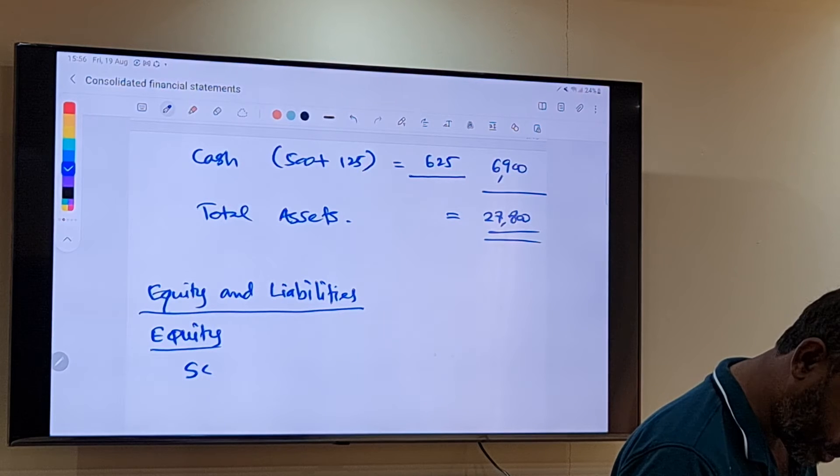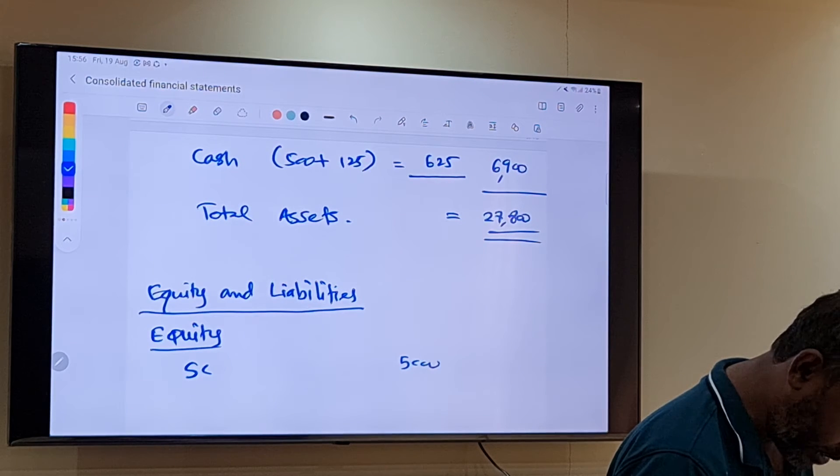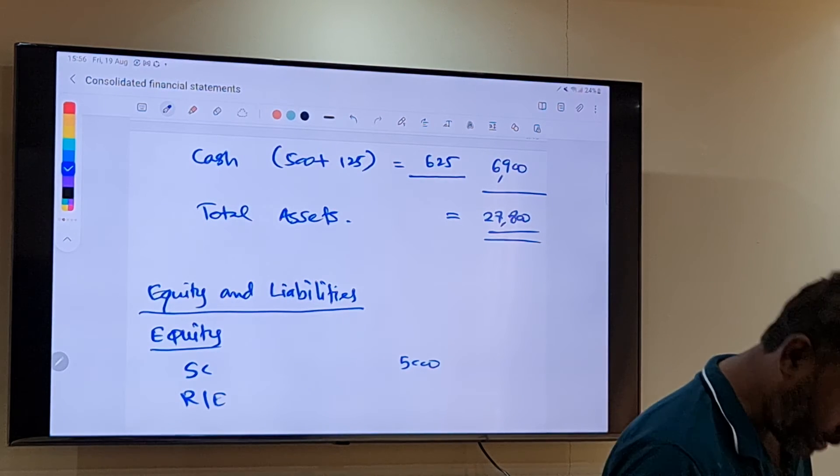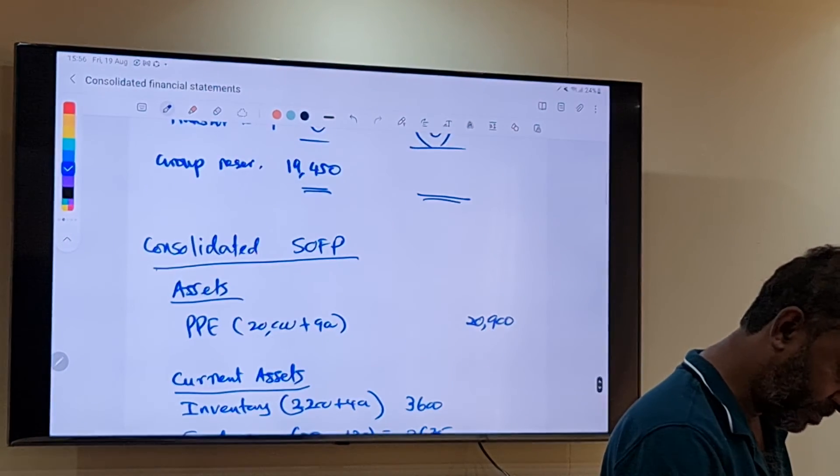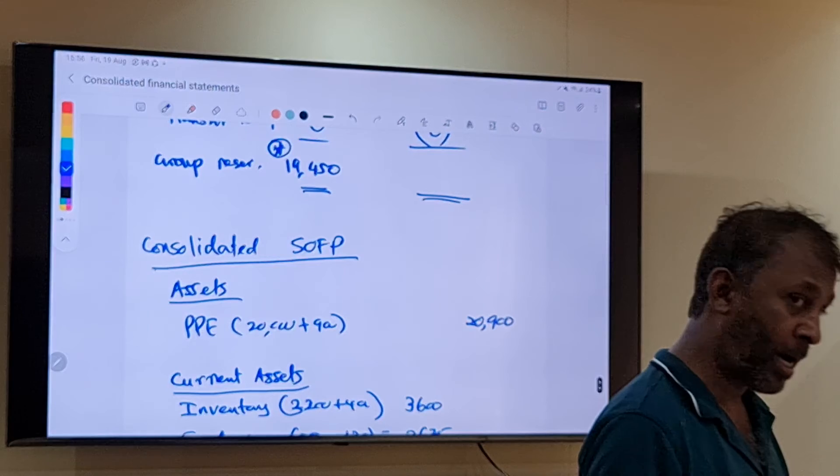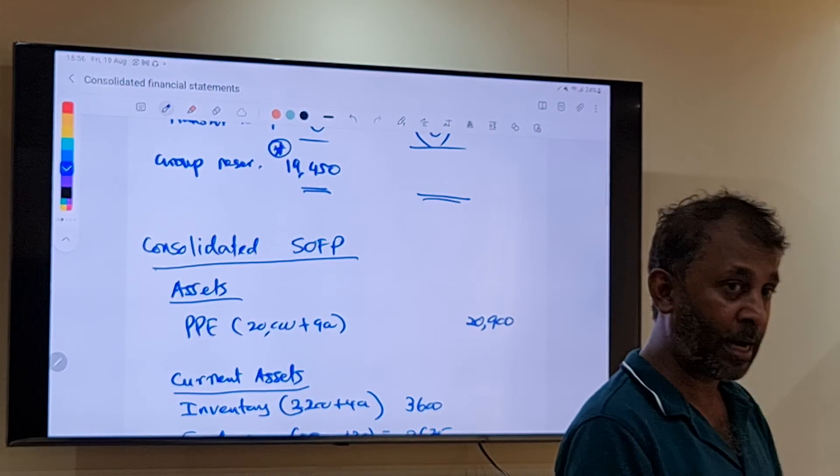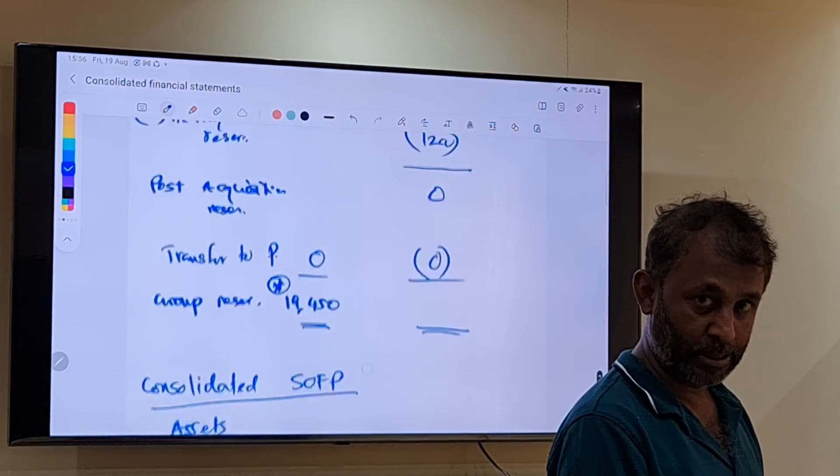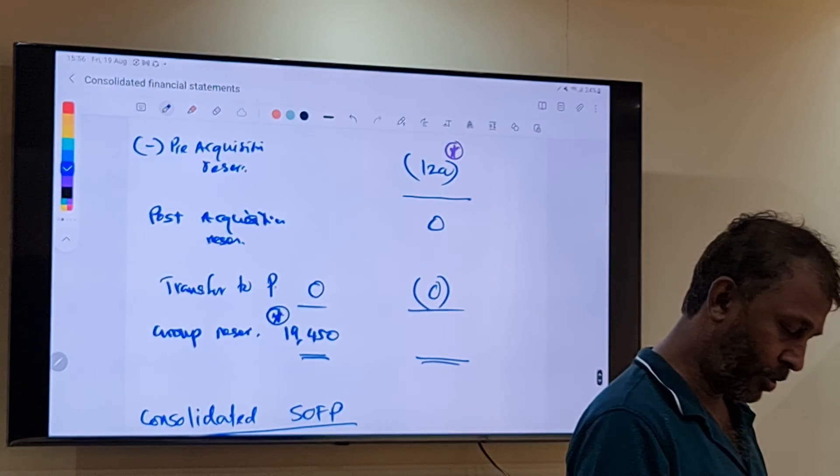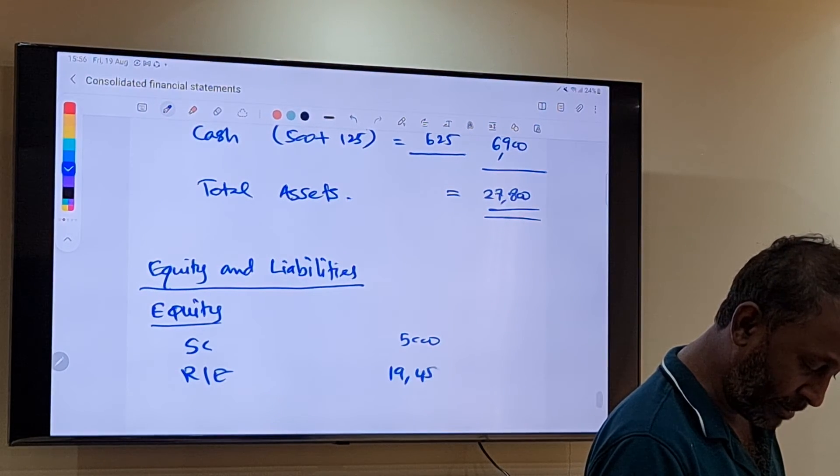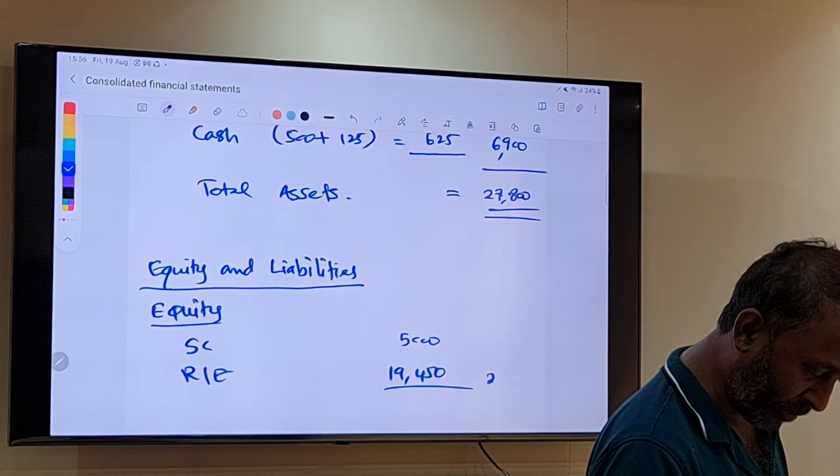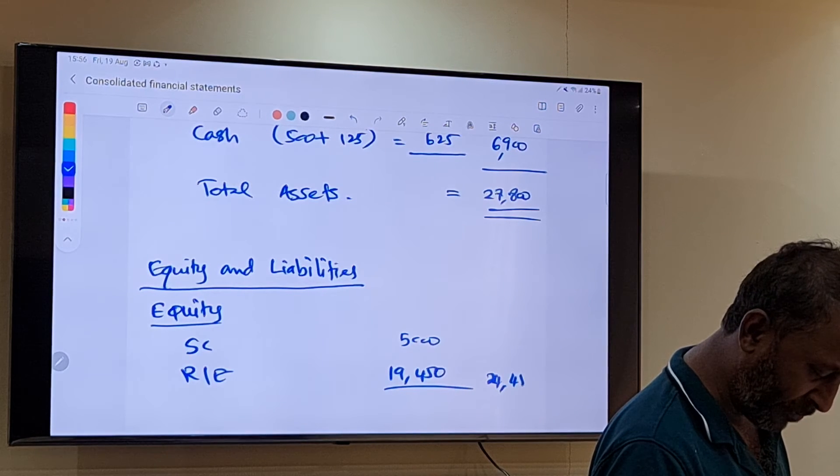Retained earnings? 19,450. We have to take this answer. Don't take the answer from the balance sheet, take the answer from your working. So it could change. So 19,450, that is 24,450 total equity.